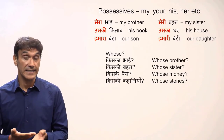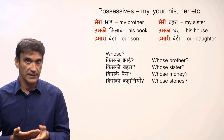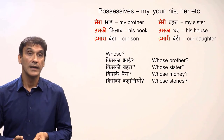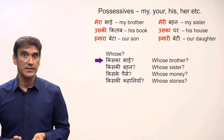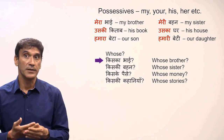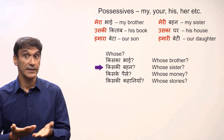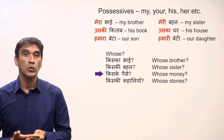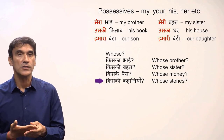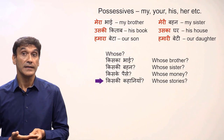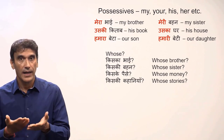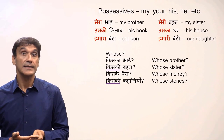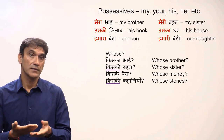The question word for possessive is kiska, meaning 'whose'. It also changes according to number and gender: kiska for masculine singular, kiske for masculine plural, and kiski for feminine singular and plural. Kiska bhai — whose brother? Bhai is masculine, so we use kiska. Kiski behen — whose sister? Behen is feminine, so we use kiski. Kiske paise — whose money? Paise is masculine plural, so we use kiske. Kiski kahaniyaan — whose stories? Kahaniyaan is feminine plural, so we use kiski. As noted, the feminine singular and plural forms are the same: kiski.